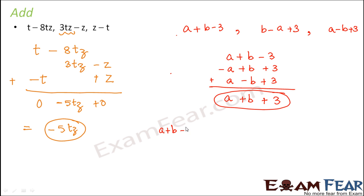So if you want, you can do it in a little different way also. So let us say this is the first expression plus the second expression plus the third expression. So first of all, you rearrange the terms such that all the a's are together. So a minus a. So let us first open the brackets. a plus b minus 3 plus b minus a plus 3 plus a minus b plus 3.